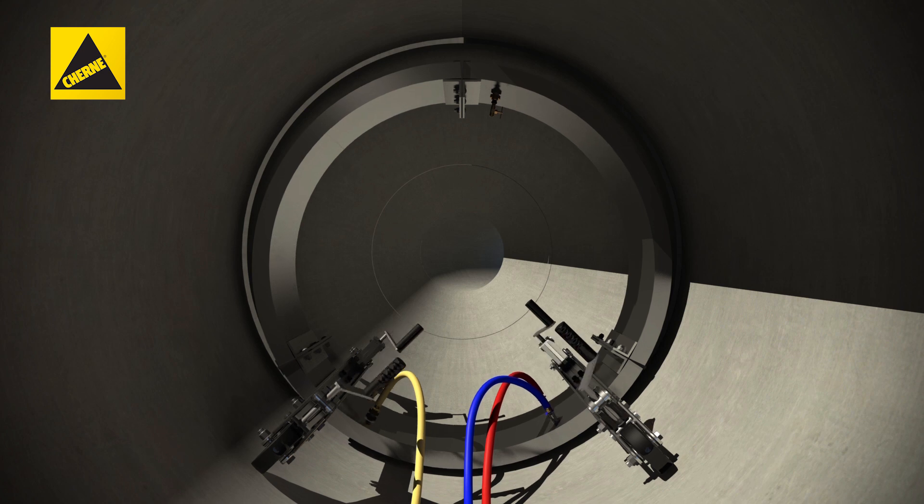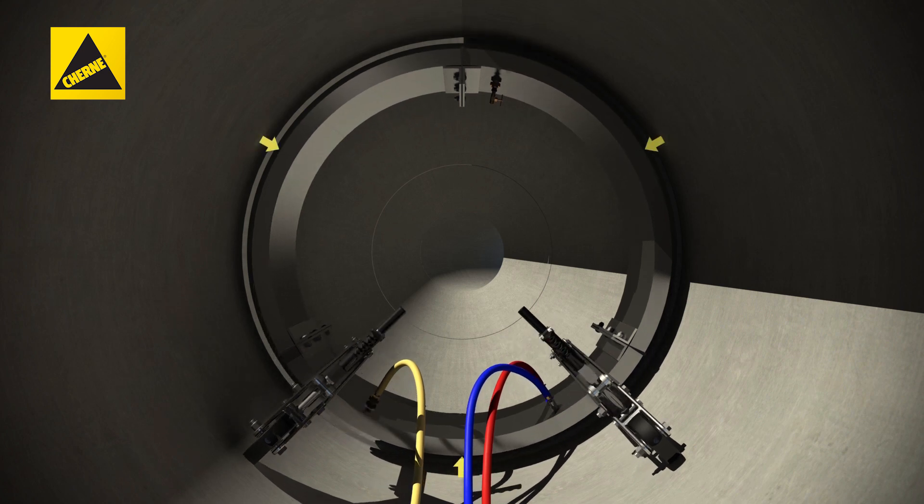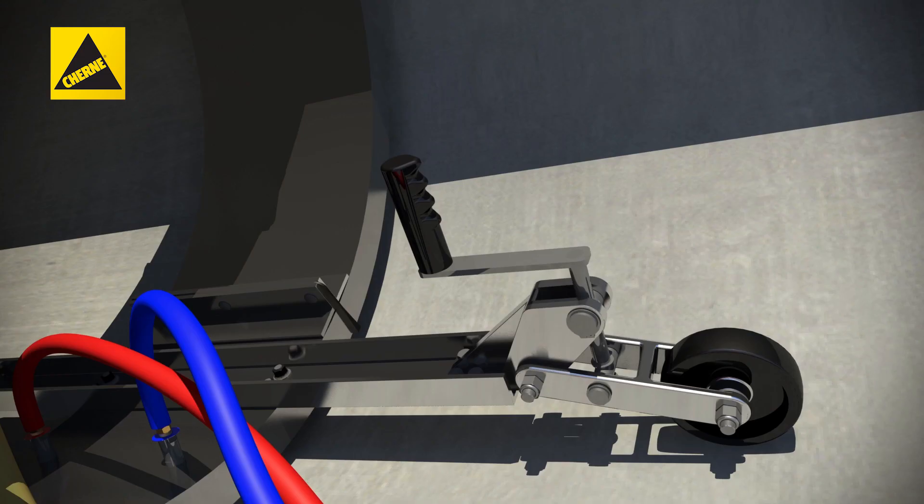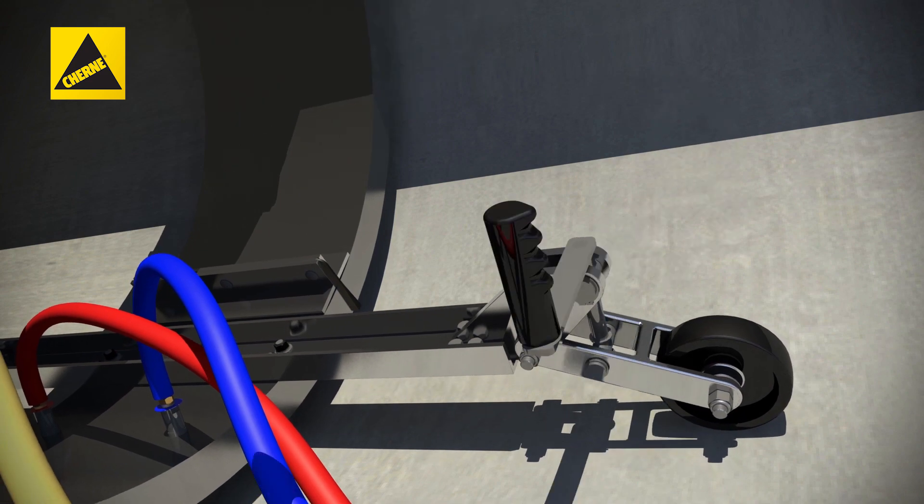Step 3. Adjust the wheel assembly so there is approximately a 1-inch space between the joint tester and the pipe wall. Adjust the height of the joint tester by turning the adjustment handles on the wheel assembly.